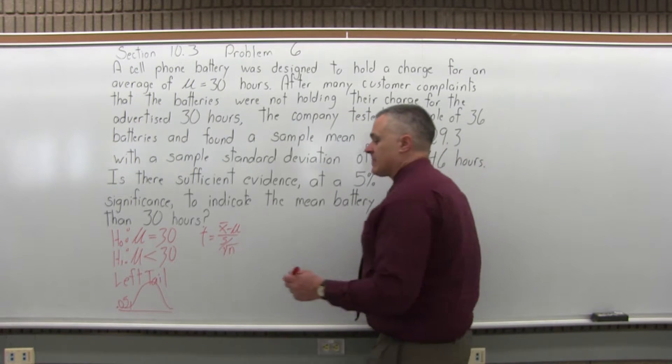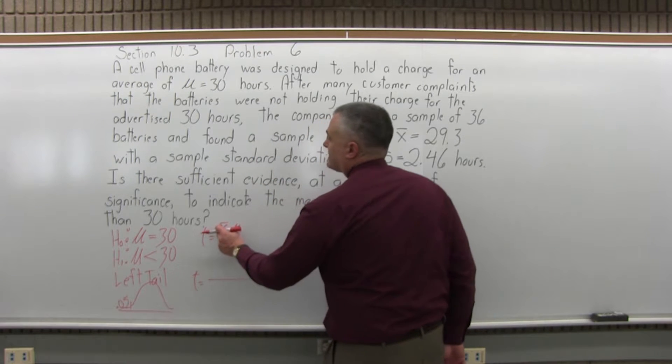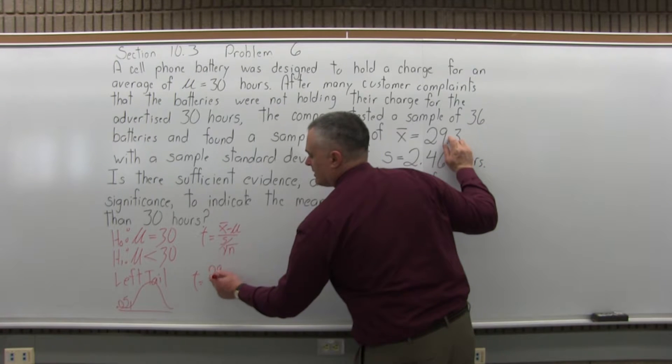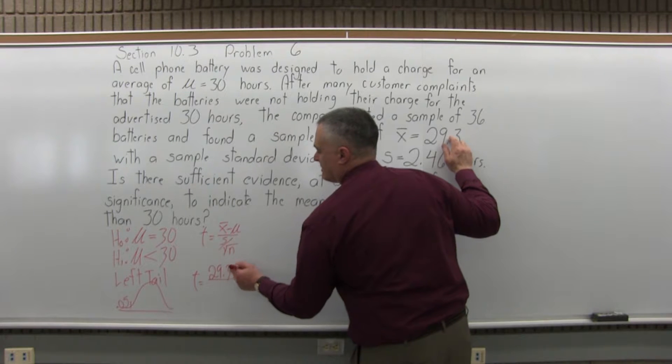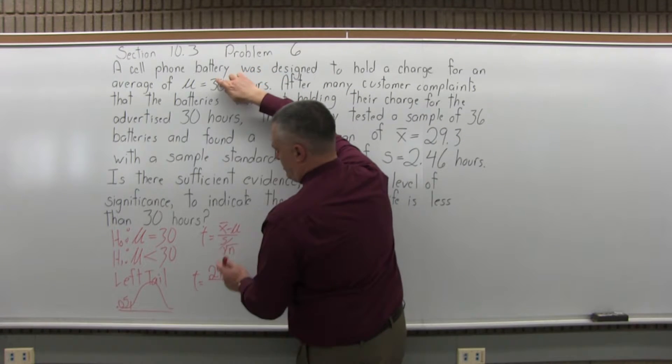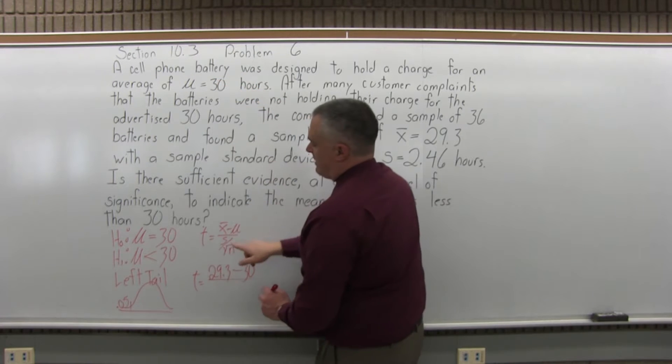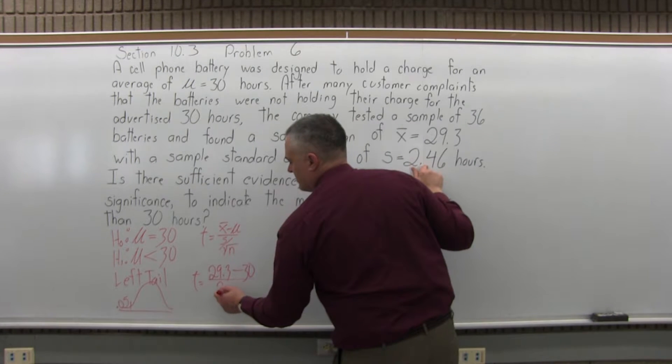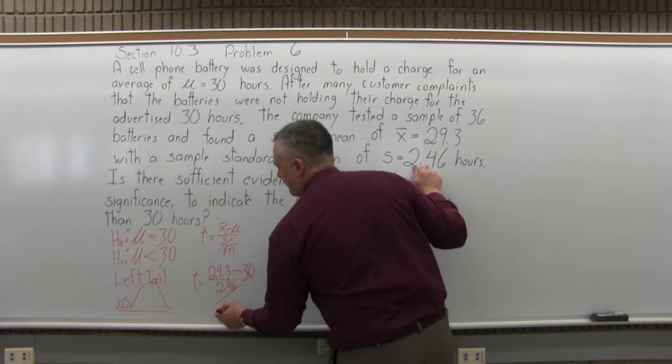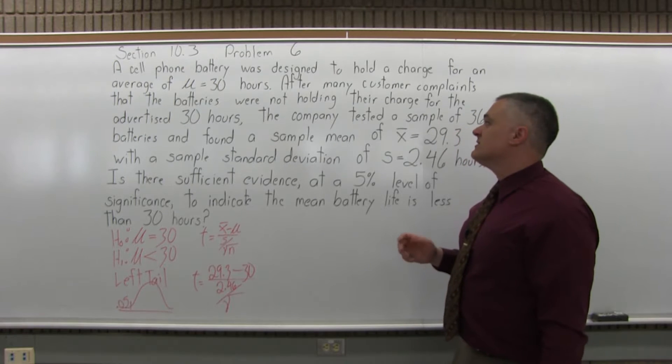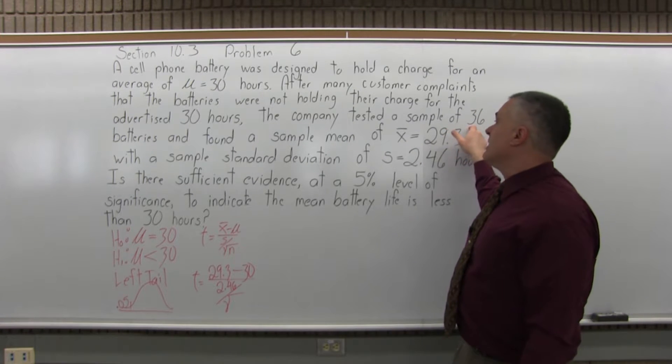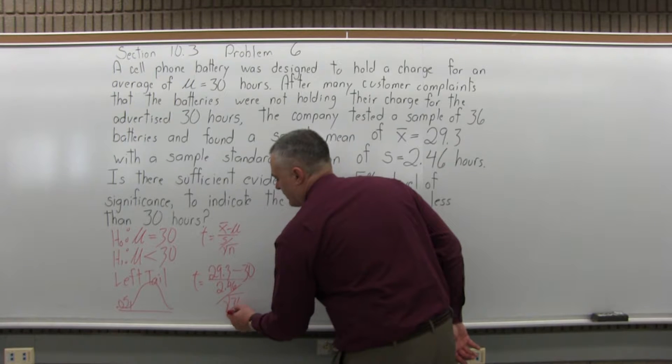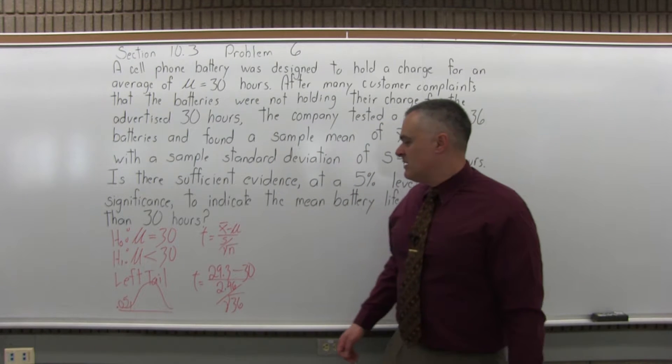So the formula for t is t equals x bar minus mu over s divided by square root of n. So that's the formula that I'll fill in. So t equals, in the numerator, x bar is given as 29.3 minus mu. Mu is 30. Then in the denominator, s, which was 2.46 over square root of n. n is the size of the sample. And for this particular problem, it was a sample of 36 batteries that were tested. So the size of the sample is 36. That's n. Don't forget the square root. That's a fairly common mistake.